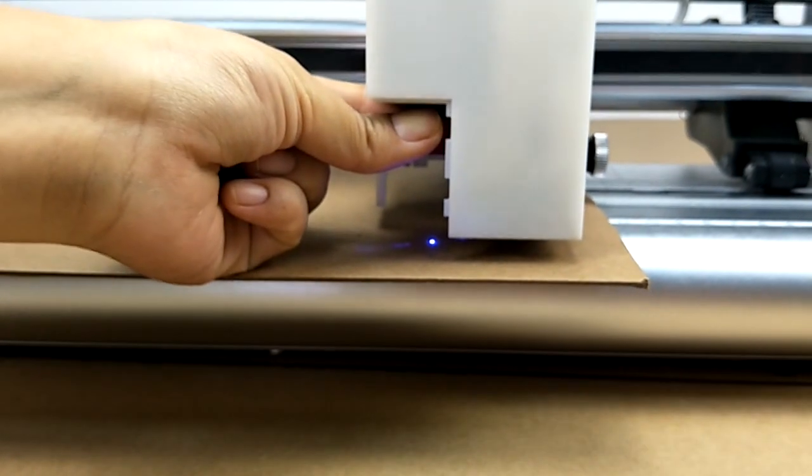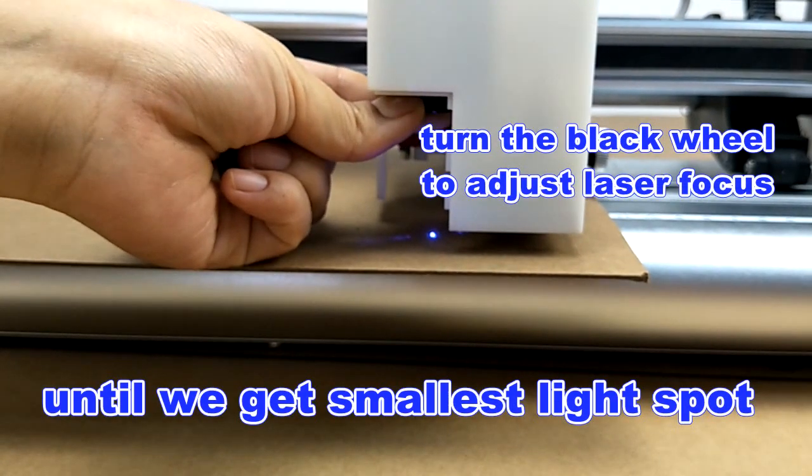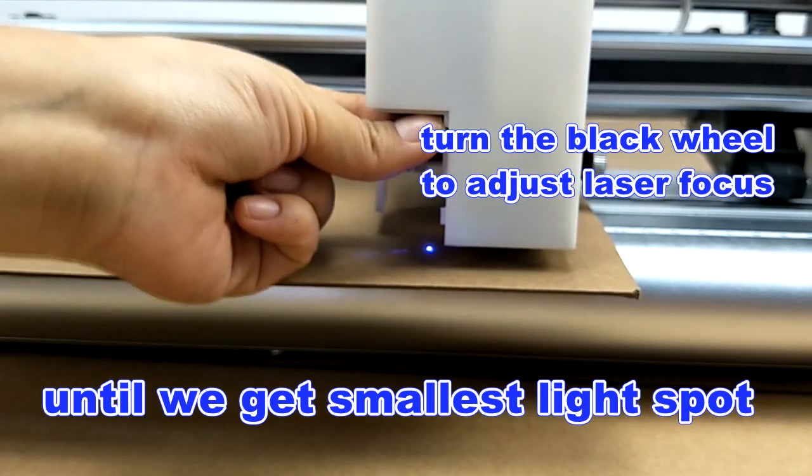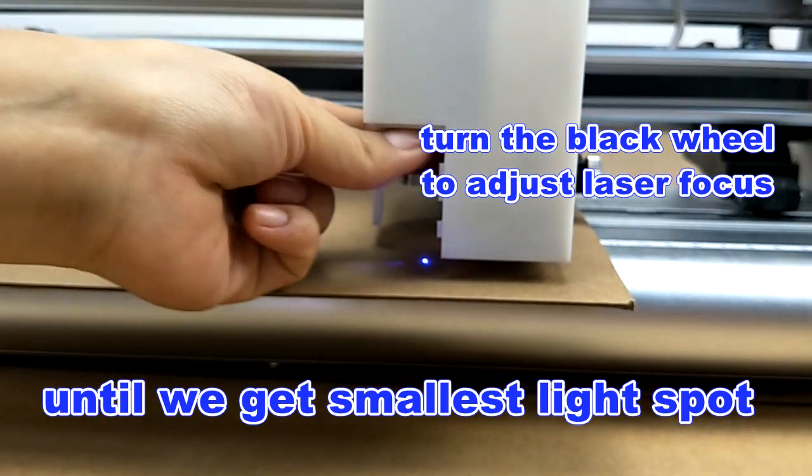Then we can turn the black wheel here to adjust laser focus. Adjust it until we get the smallest light spot.